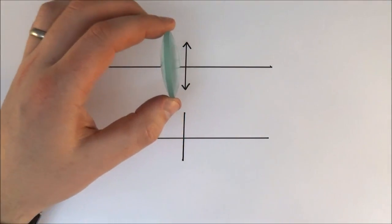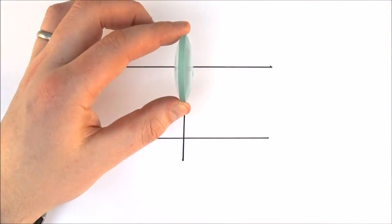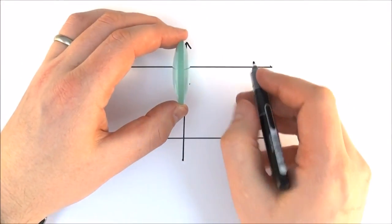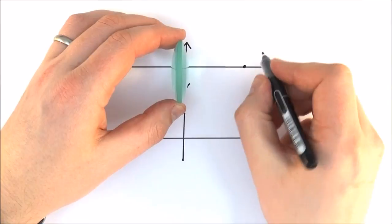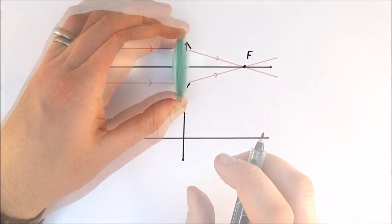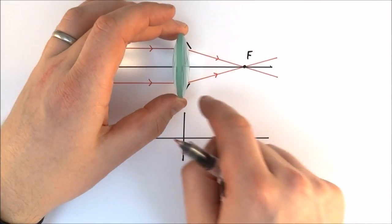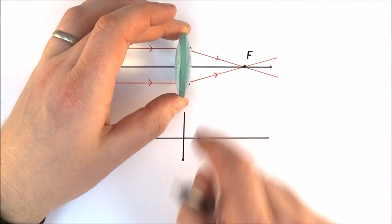With a converging lens, we can represent it with a double-headed arrow like this. There's going to be a point where all parallel rays of light converge at one point, which we call the focal point. If we just draw the lines in, we see something like this. I've drawn these with a ruler and put an arrow to show which way they're going.